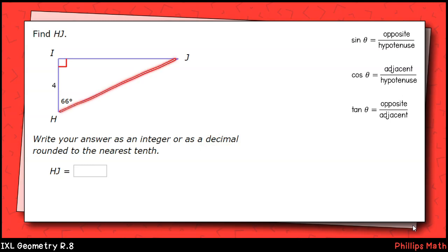We're solving here for the hypotenuse HJ. We're given a 66 degree acute angle, and we're given the side adjacent to that angle. With this in mind, we'll choose the cosine function from our menu, since cosine relates an angle to its adjacent side to the hypotenuse of the right triangle.